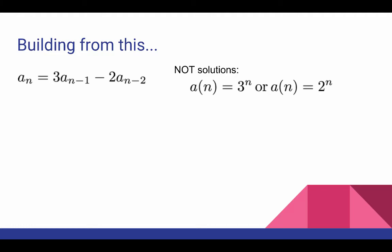However, maybe there is some number out there, let's call it r, such that a of n equals r to the nth is a solution. So we're going to make this guess and then see what would have to follow.